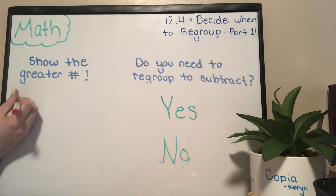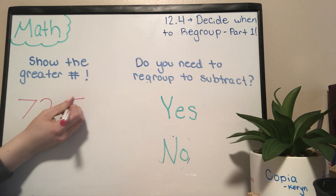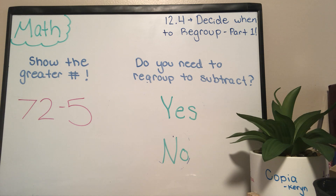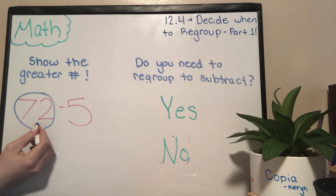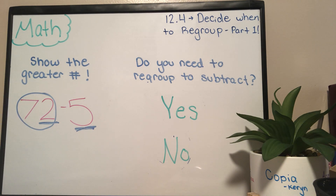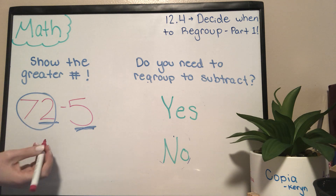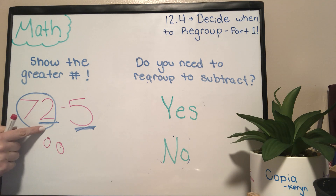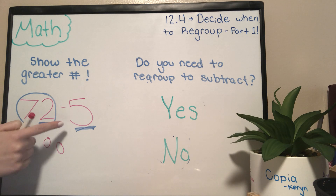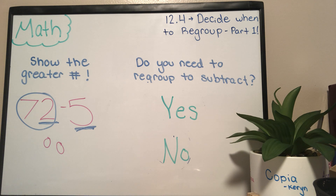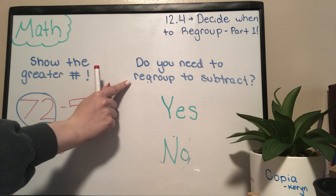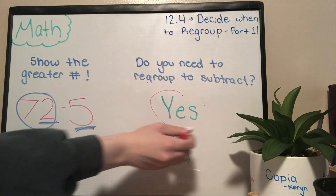Now let's try the problem 72 minus 5. Which number is bigger here — 72 or 5? It's going to be 72. Now let's take a look at the numbers in the ones place so we can answer the second question: do you need to regroup to subtract? Two is the number in the ones place in 72. I have two cookies left on the plate at my bake sale and somebody comes up and they want five. Do I have enough? No. Do I have to go back into the kitchen and start baking some more cookies? Do I need to regroup? Yes, I do. Let's go ahead and circle yes.